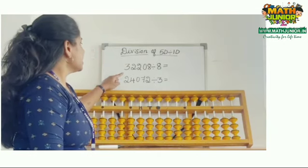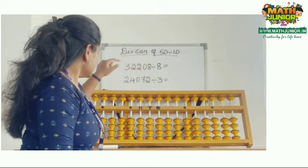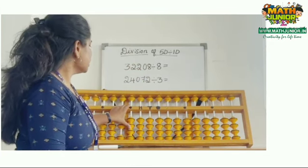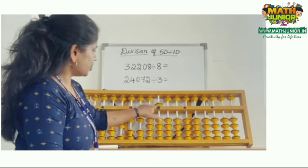The first example is 32208 divided by 8. Place 32208 using 10100 10 cent unit place.